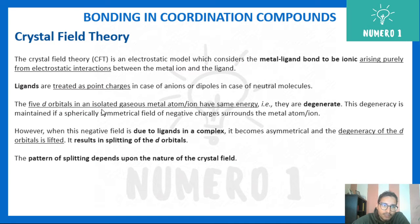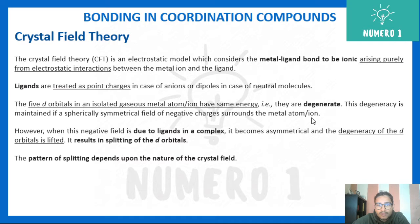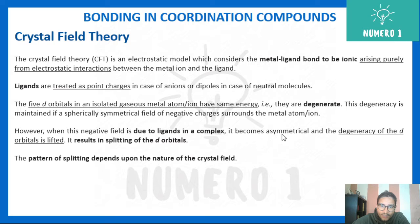The five d orbitals in an isolated gaseous metal atom have the same energy — they are called degenerate. This degeneracy is maintained only if a spherically symmetrical field of negative charges surrounds the metal ion. However, when the field is due to ligands in a complex, it becomes asymmetrical, and the degeneracy of the d orbitals is lifted, resulting in splitting of the d orbitals.